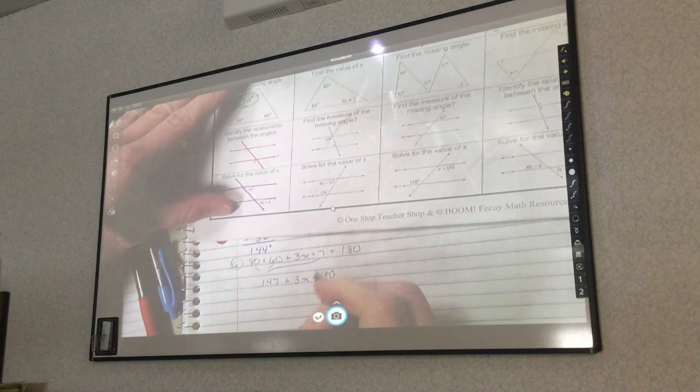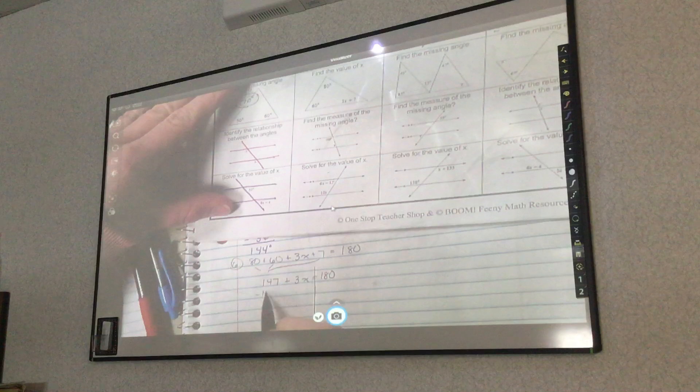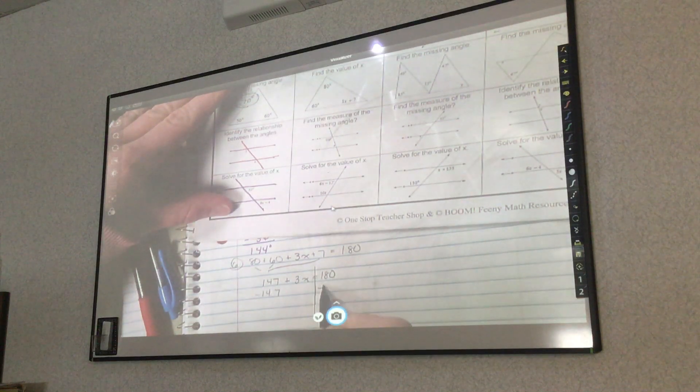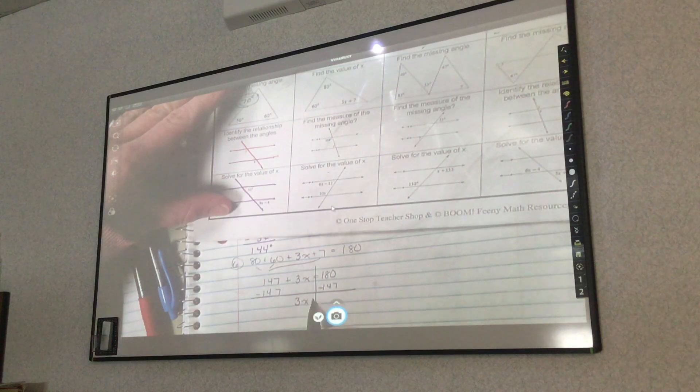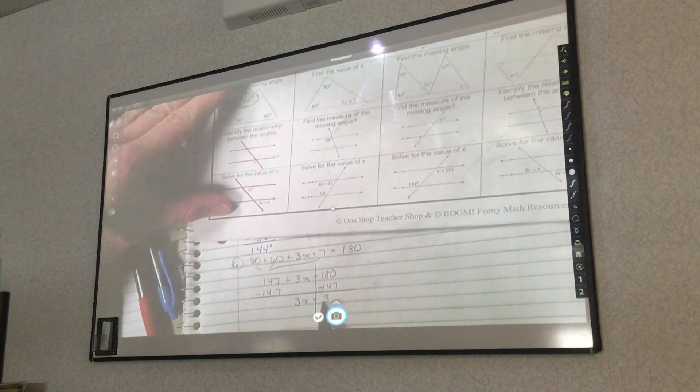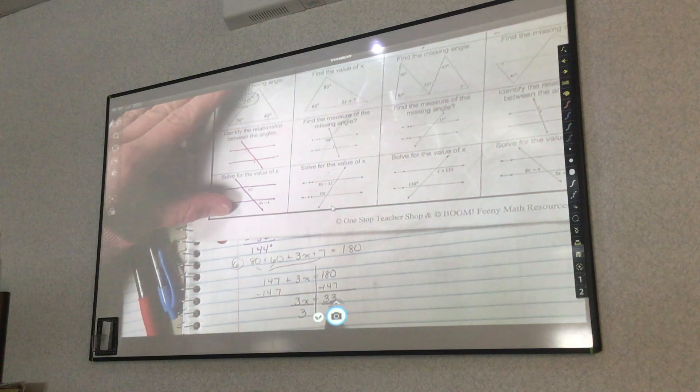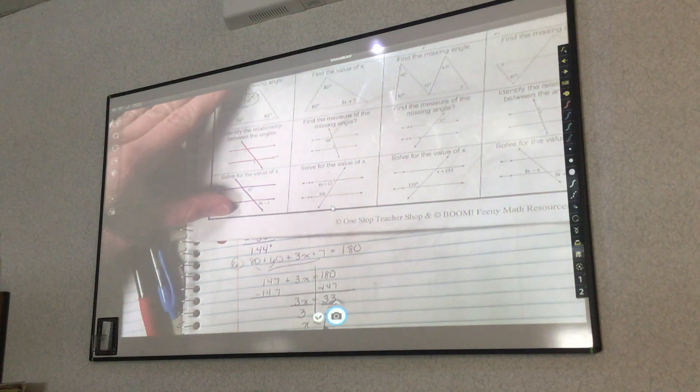So then I can solve. Subtract 147. So now I have 3X equals 33, divide by 3 on both sides. X equals 11.